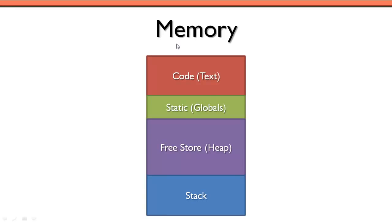When we compile a C++ program, the compiler allocates memory for different things. One area is for the instructions in our program — called the code or text area. It also allocates a portion for global variables, often called the static area. There's also the stack area, sometimes called the call stack — any time we call a function, we get a portion of this memory allocated for local variables and possibly return values. We'll skip over the free store or heap for now and focus on the stack.